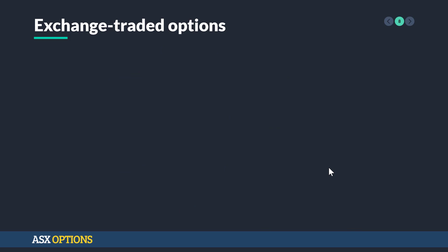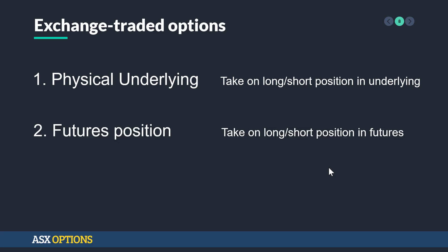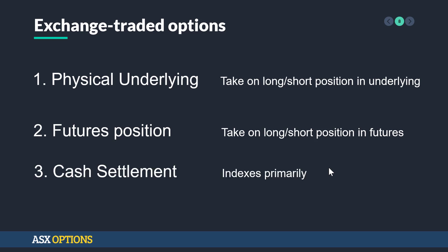With exchange traded options, depending on the contract, one of three things can happen in settlement. First, you can settle into the physical underlying, taking on either a long or short position in that underlying — picture a stock, for example. Second, you can take on a futures position, settling into a long or short position in the corresponding futures. Or third, you can have cash settlement, which is primarily the case with indices such as the ASX 200.